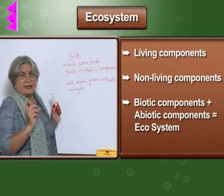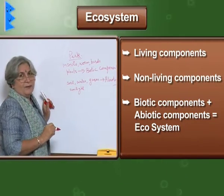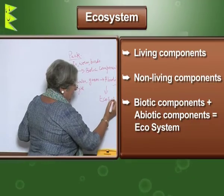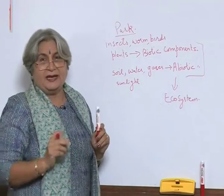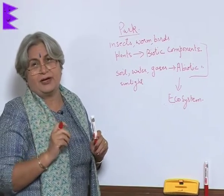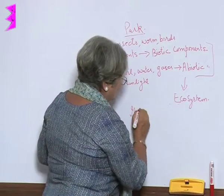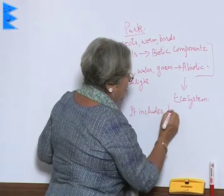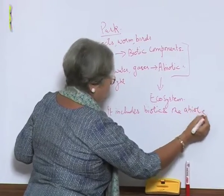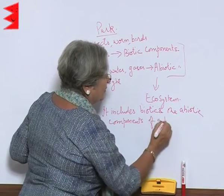When we take into account a particular place, both biotic and abiotic components together constitute an ecosystem. So we can say that an ecosystem includes both biotic and abiotic components of a particular place.